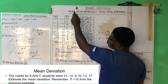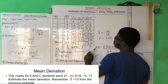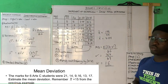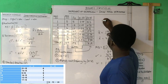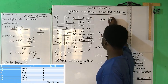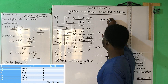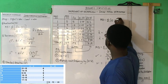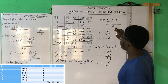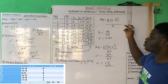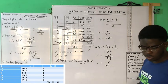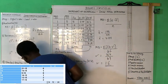Another formula that was given for mean deviation without frequency is: MD equals the summation of the absolute difference between each x value and the mean, divided by n, where n is the number of values.